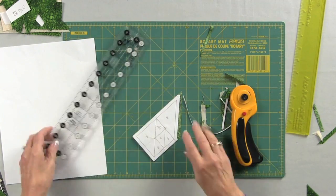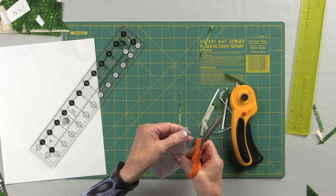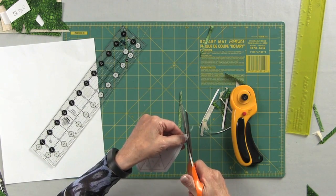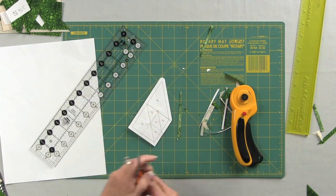And I also clip my little points. I usually just take a pair of scissors and just hold it tight and just trim those off. Because when you're putting your units together it's going to make it a little easier to match it up.